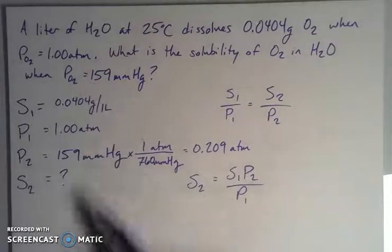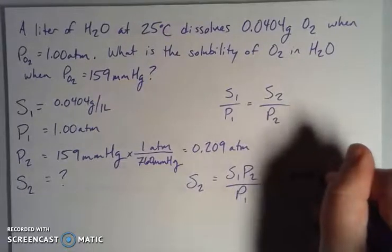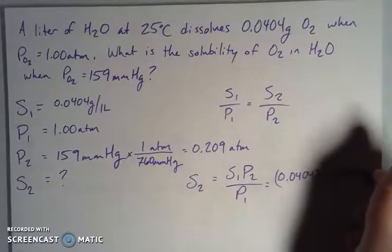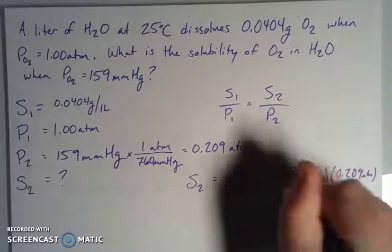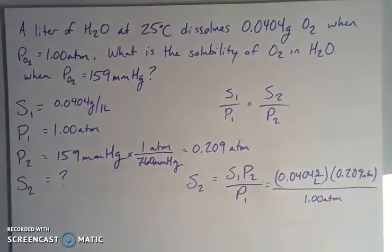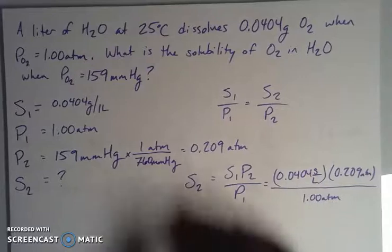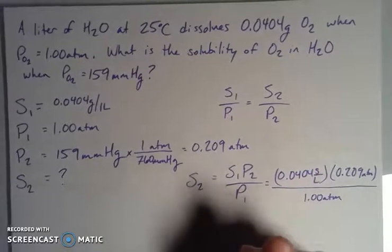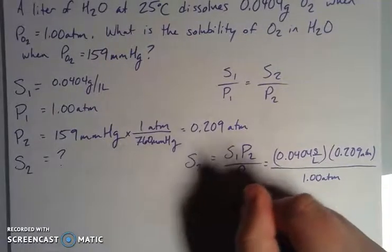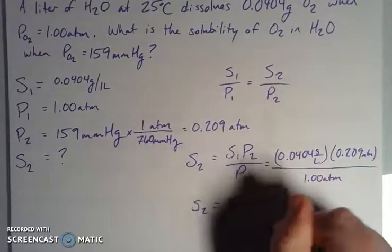And then now that I'm in all the same units here, I have my solubility, grams per liter times my P2, which is that 0.209 atmospheres over my P1, which is the 1. So if I'm analyzing my units here, my atmospheres are going to divide out and leave me with an answer in grams per liter, which is good because that's going to be a solubility, and that's what I'm solving for. And I got 8.44 times 10 to the negative third grams of my O2 per one liter of water.